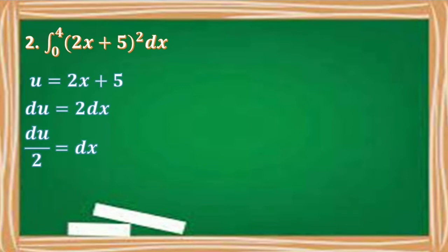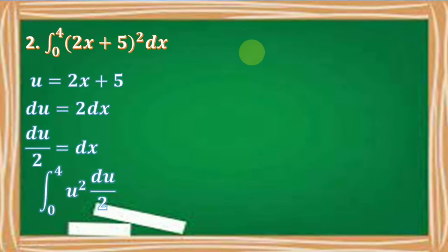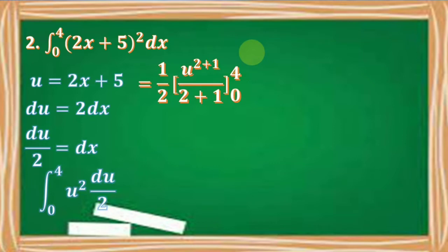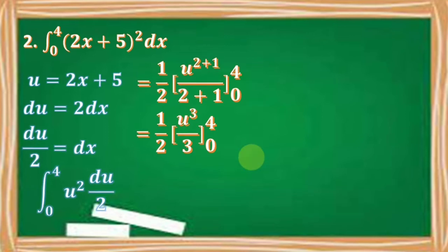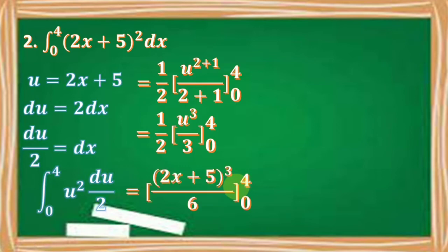Our integral now becomes the integral of u squared times du over 2 from 0 to 4. Getting the antiderivative, we have one half times u raised to 2 plus 1 over 2 plus 1, which gives us one half times u cubed over 3 from 0 to 4. Replacing u by 2x plus 5 and multiplying the denominators, we have the quantity 2x plus 5 cubed over 6 from 0 to 4.